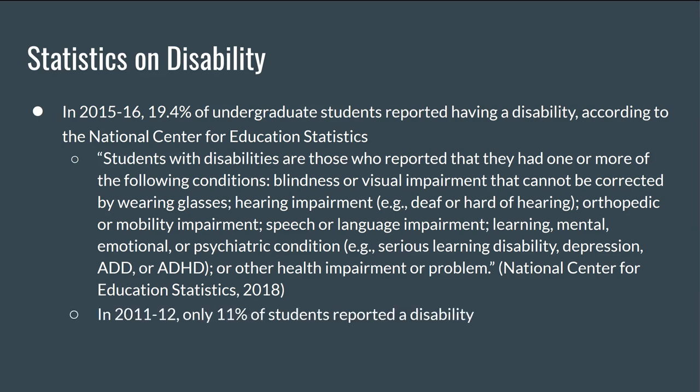This number is particularly remarkable because as recently as the 2011–2012 academic year, just 11% of undergraduate students reported a disability. The rise is likely due to better awareness of disability among students and therefore more diagnoses, less stigma around disability — though stigma does still exist — and better support structures and accommodations for students with disabilities.